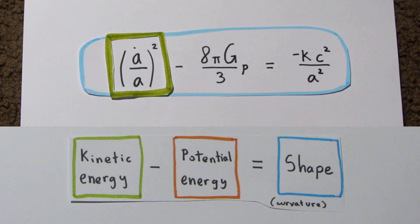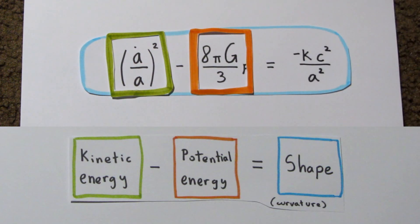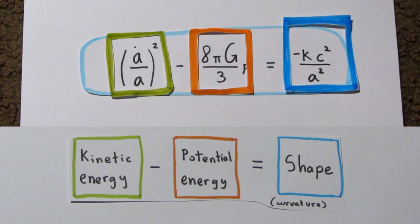The left-hand side of the Friedman equation describes this fight between kinetic and potential energy. The right-hand side describes the shape of the universe.